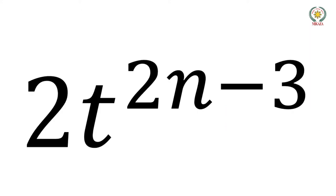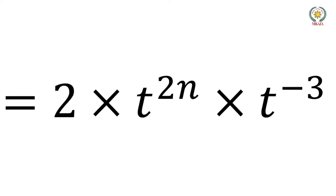Another one. Look here: 2t to the power 2n minus 3. This is 2 multiplied by 3, times t to the power 2n, times t to the power minus 3.